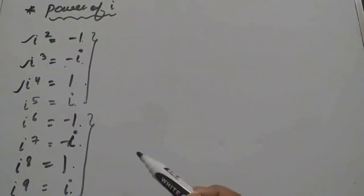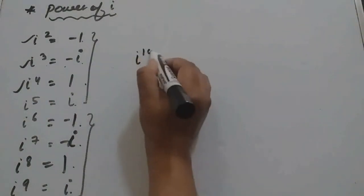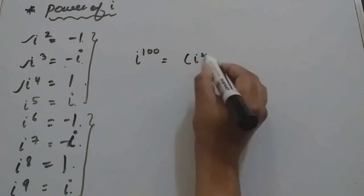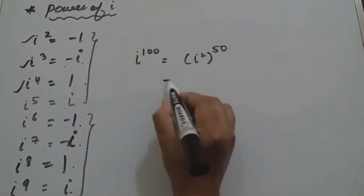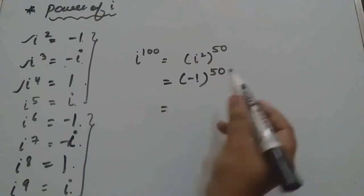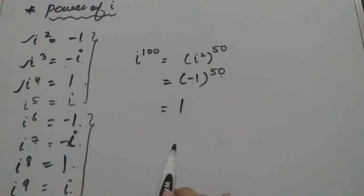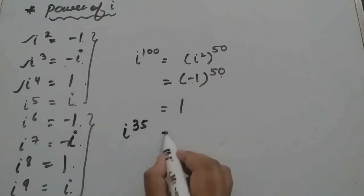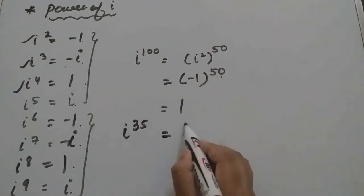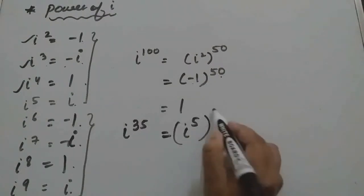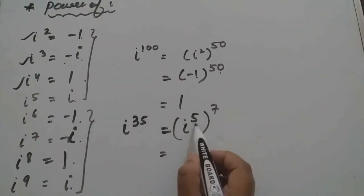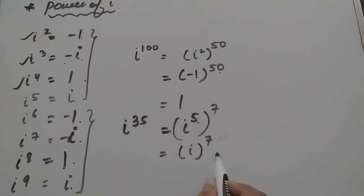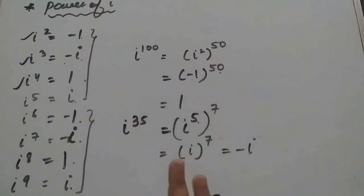We can find any power of i using this pattern. For example, i to the power 100: write i squared to the power 50, which is minus 1 to the power 50. Since the power is even, the answer is plus 1. For i to the power 35: we can split it as i to the power 5 times i to the power 7, giving i times minus i equals minus i squared equals 1... or use the trick of splitting odd powers.